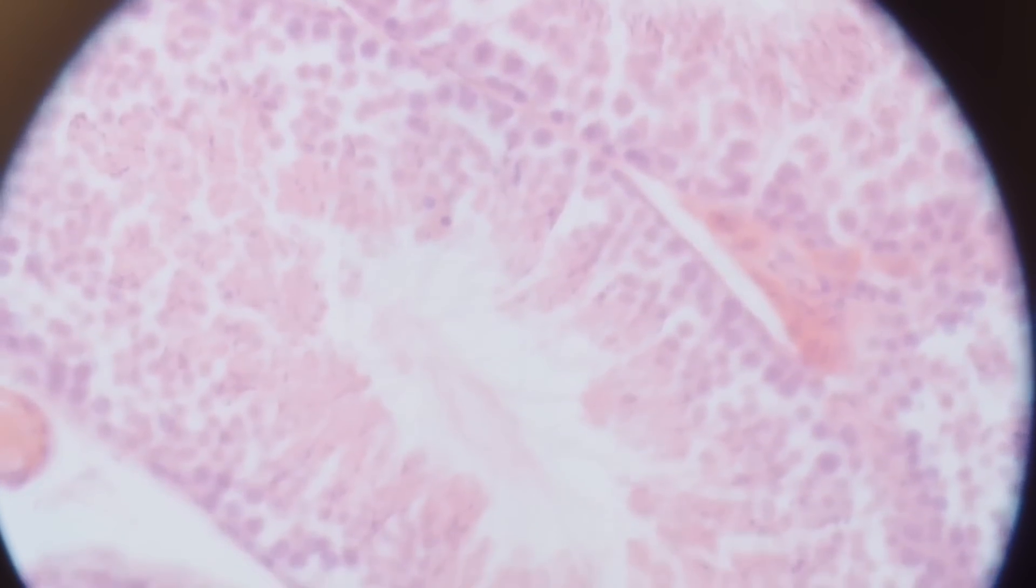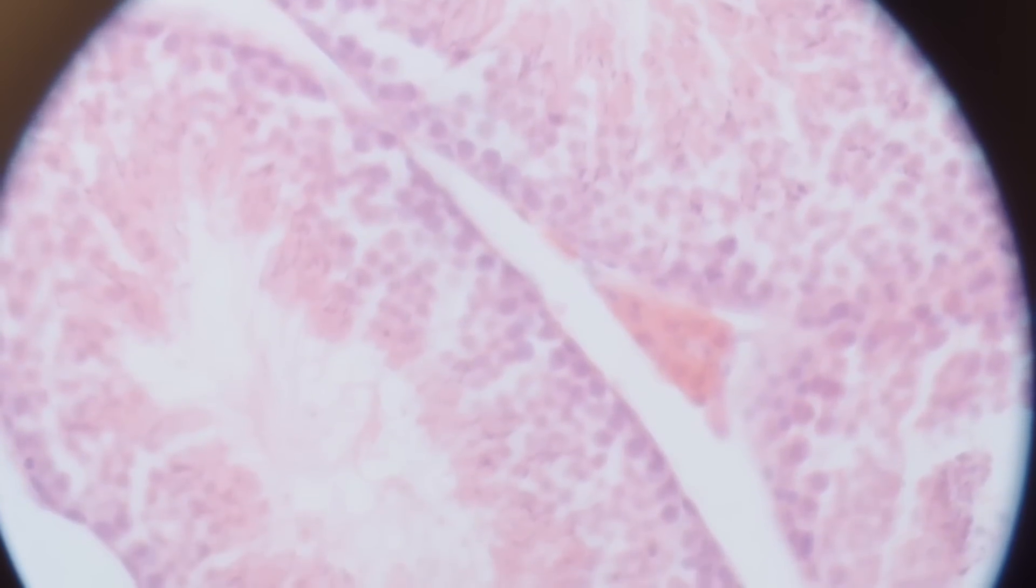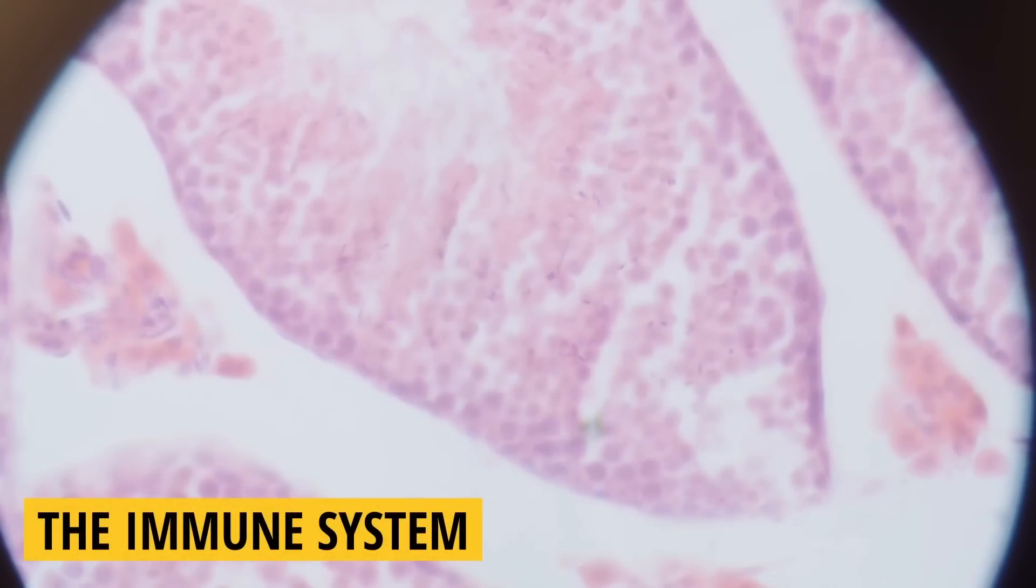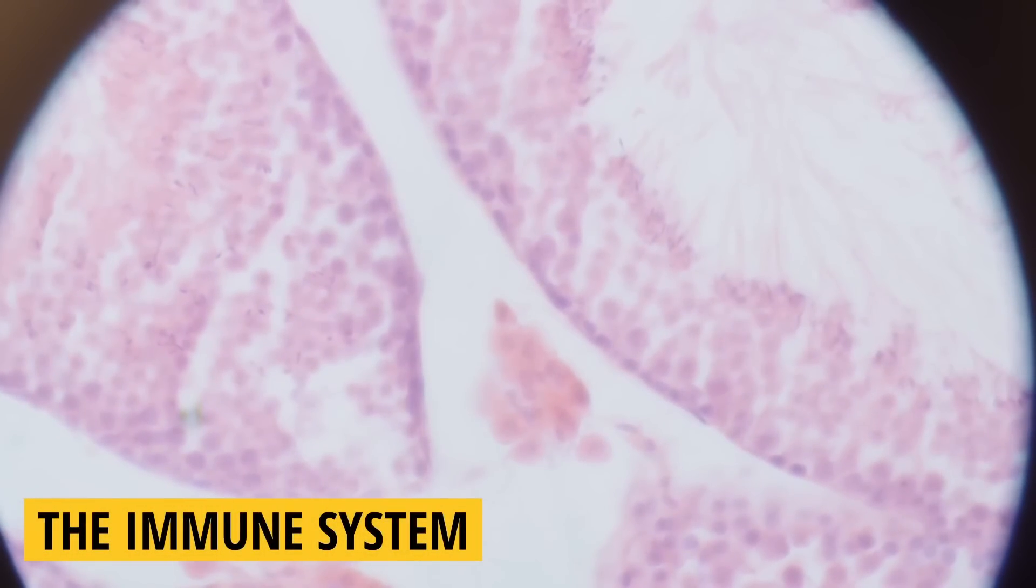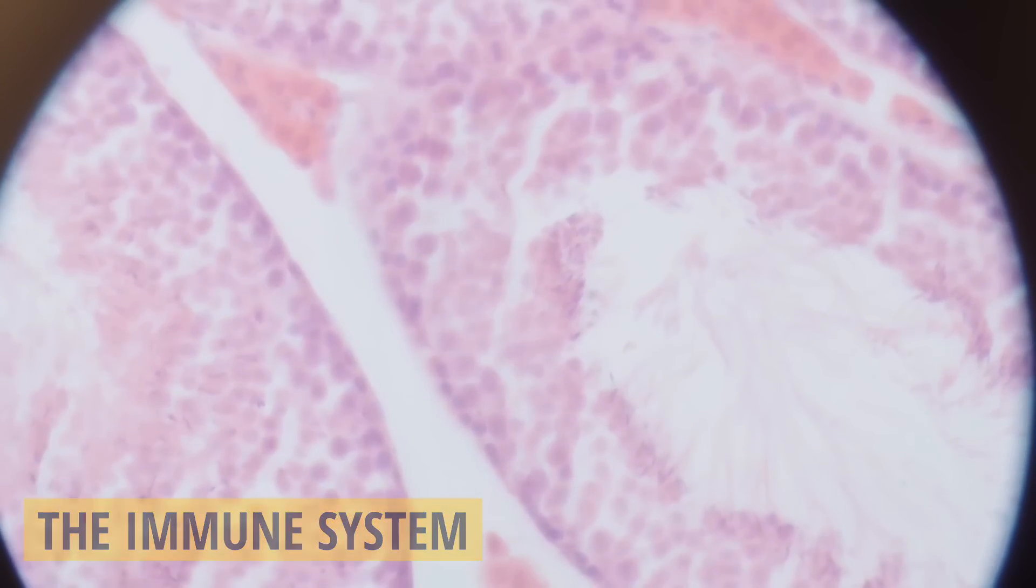To avoid this, our human body has another function as the last line of defense, which is the immune system. The immune system detects these cells every moment. Once such zombie cell is found, the immune system will destroy them to ensure the normal functioning of our body.